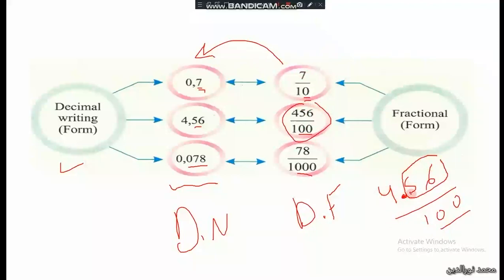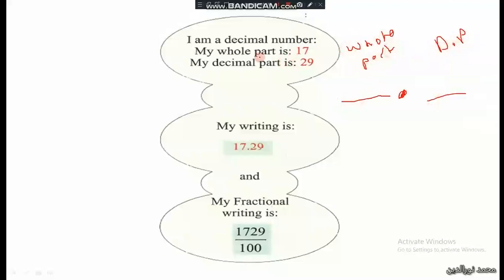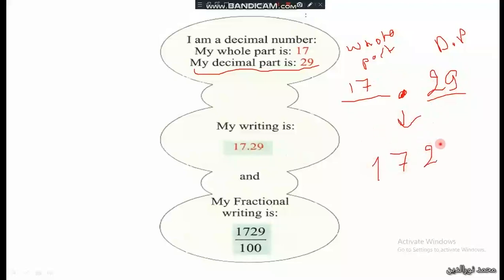A decimal number: my whole part is seventeen — to the left of the decimal point is the whole part, to the right is the decimal part. My decimal part is twenty-nine, so it's seventeen point twenty-nine. We can write this as a decimal fraction: write one seven two nine without the decimal point, over two zeros — two decimal digits — so over hundred.